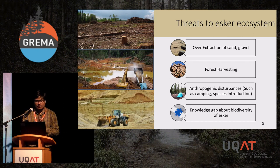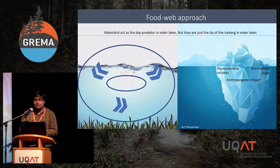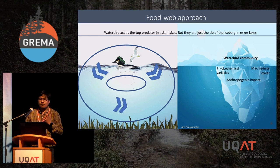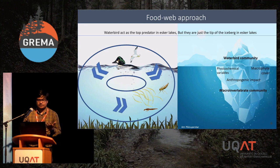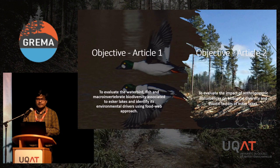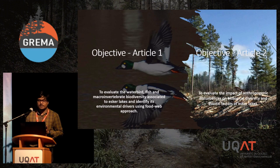There is a huge knowledge gap about the biodiversity and functioning of ESCR ecosystems. To eliminate that knowledge gap, we are implementing a unique food web approach. Waterbirds act as top predators in ESCR lakes, but they are just the tip of the iceberg because their population depends on two other things: feeding resources such as macroinvertebrate communities and fish communities. Therefore, we developed two studies to understand the biodiversity and the threats to it.